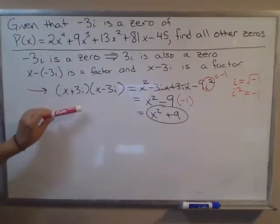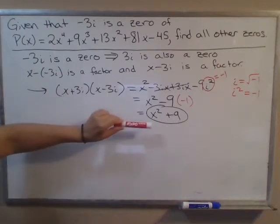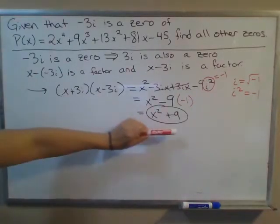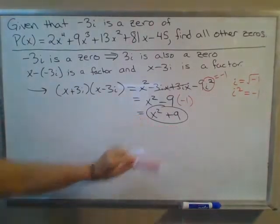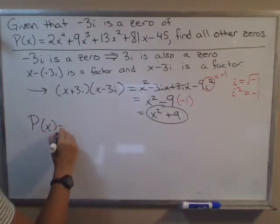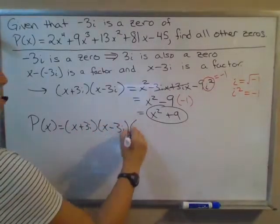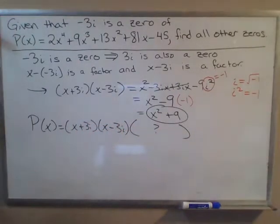Each of those are factors of this polynomial according to the factor theorem, which means their product would have to be a factor. The big picture here is that P(x) equals (x + 3i)(x - 3i) times something else, some mystery polynomial here.